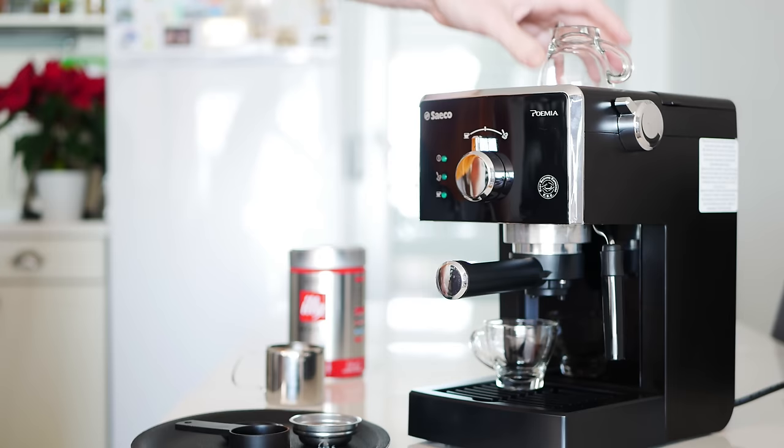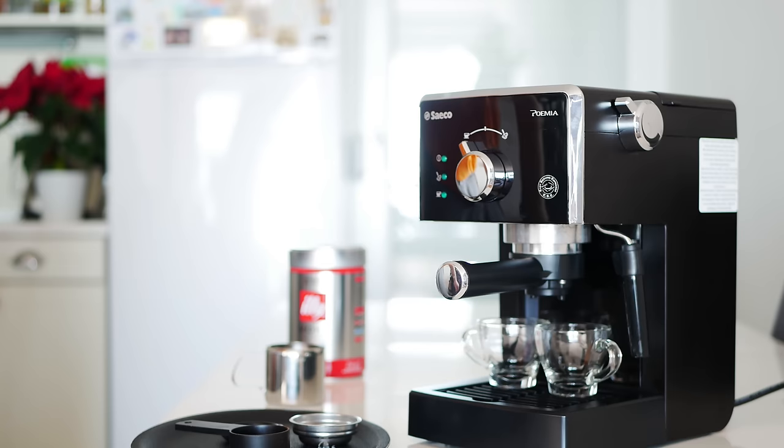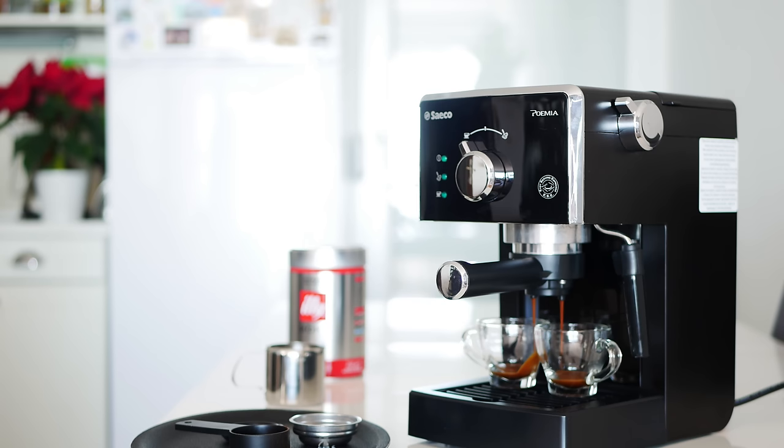Put the espresso cup underneath and turn the knob to the left. When your desired level of coffee is extracted, turn the knob to the center to terminate the extraction.